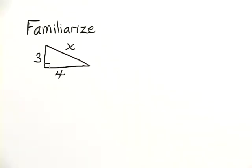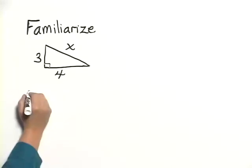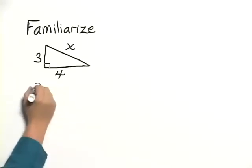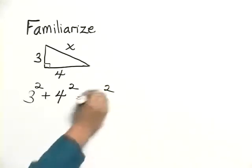Since we have a right triangle, we can translate using the Pythagorean Theorem. We have 3 squared plus 4 squared equals x squared.